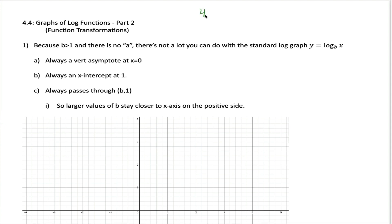Back in section 4.2, we learned how to graph exponential functions — functions of the form a times b to the x power. These graphs can look really different because a can be positive or negative, and b can be between 0 and 1 or greater than 1. That gives you four different options, and depending on which you fall in, the graph is going to look totally different.